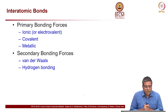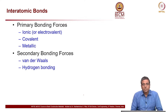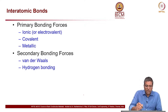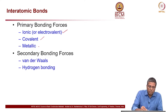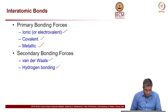Now, let us look at interatomic bonds. There are different types of bonds, two classifications: primary and secondary. In primary, there are ionic, covalent, and metallic bonds, and in secondary, van der Waals and hydrogen bonds. We will very briefly go through these today.